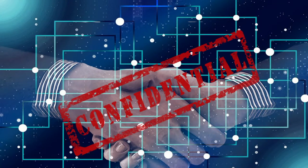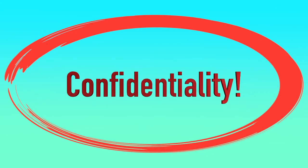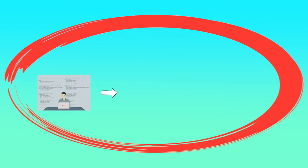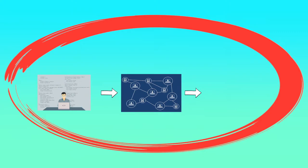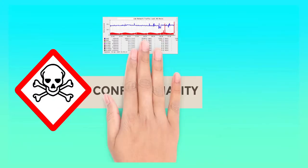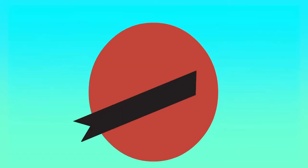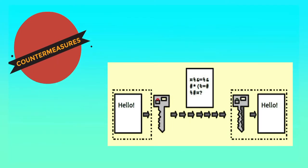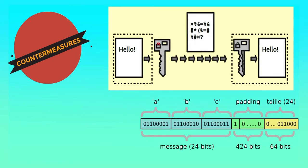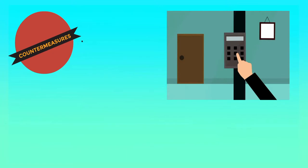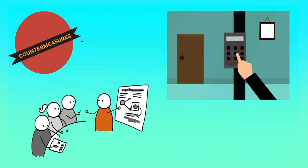The first security principle is confidentiality. It ensures that the necessary level of secrecy is enforced at each junction of data processing and prevents unauthorized disclosure. This level of confidentiality should prevail while data resides on systems and devices, while it is transmitted within the network, and once it reaches its destination. Threat sources to confidentiality include network monitoring, shoulder surfing, stealing password files and social engineering. Countermeasures include encrypting data as it is stored and transmitted, using network padding, implementing strict access control and data classification, and training personnel on proper procedures.